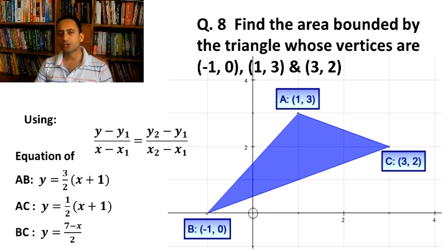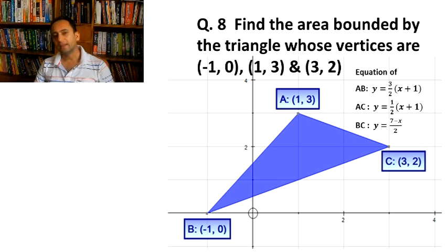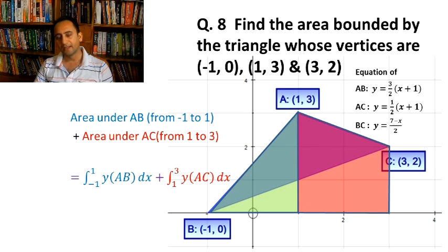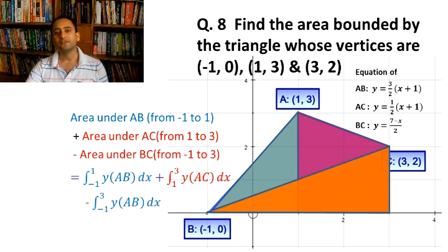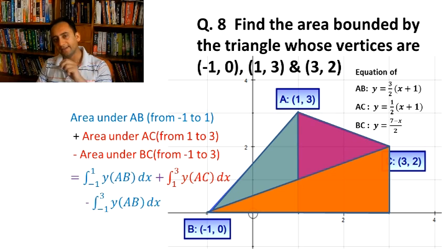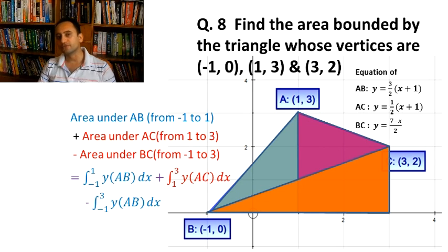No need to convert these equations into standard form ax + by = c, because ultimately we only need to substitute the value of y in the integral. The required area equals area under side AB from x = -1 to x = 1, plus area under AC from x = 1 to 3, minus area under BC from x = -1 to x = 3. So: required area = integral from -1 to 1 of y_AB dx + integral from 1 to 3 of y_AC dx − integral from -1 to 3 of y_BC dx, substituting the calculated y equations.